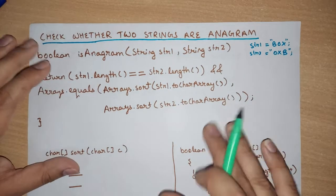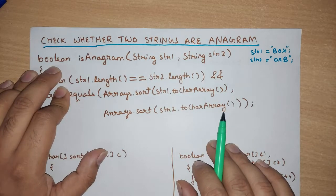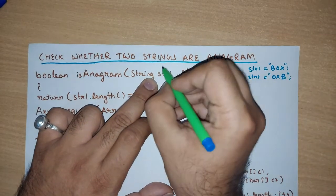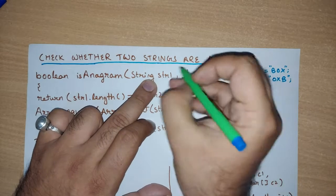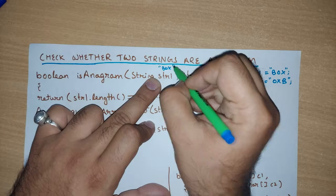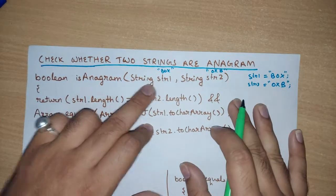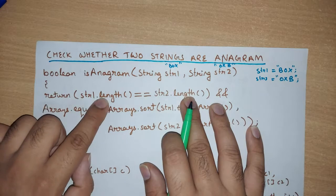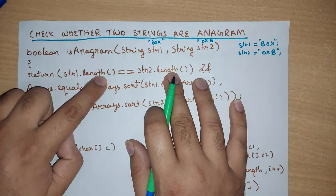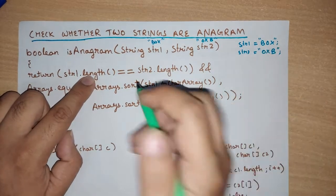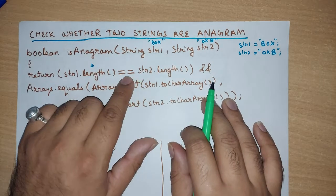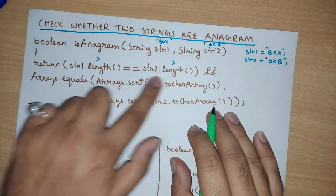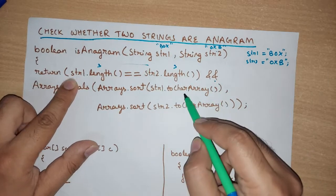This is a one-liner program. The data type is boolean, and the method name is isAnagram — it will check whether the two strings are anagrams or not. str1 contains 'box' and str2 contains 'oxb'. The first statement is a return statement. First, we check the length: str1.length() equals three, and str2.length() is also three, so this condition is true.